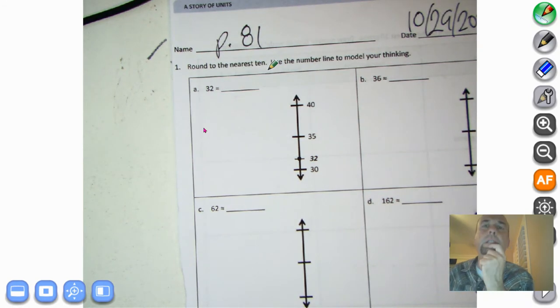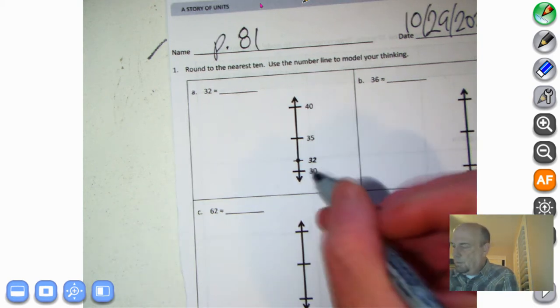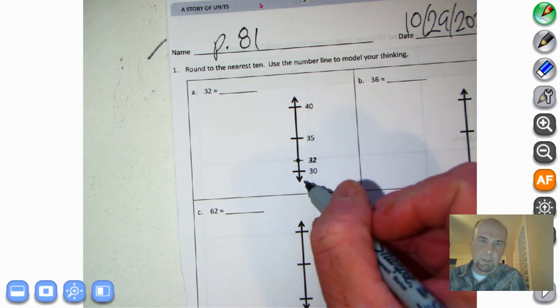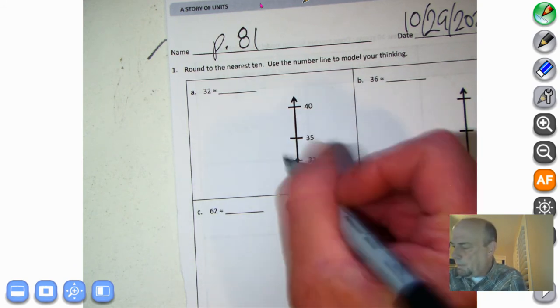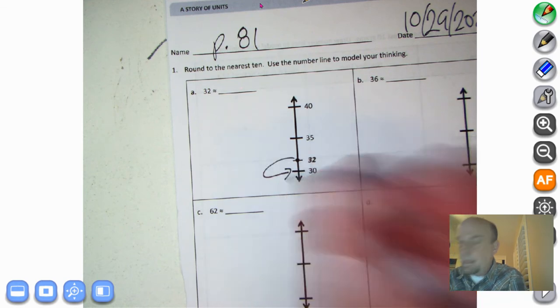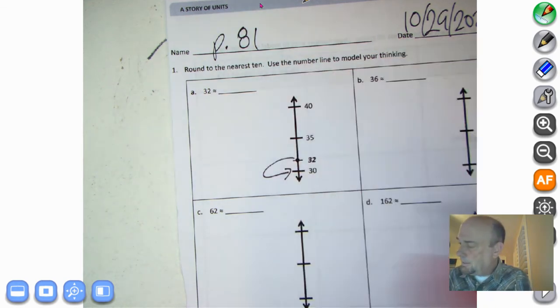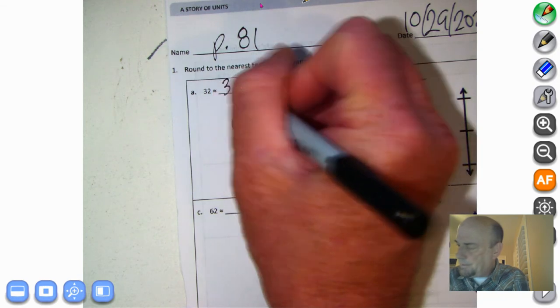Okay, so round to the nearest 10, use the number line to model your thinking. All right, so we have 32. Folks, look at this. What's it closer to? Is it closer to 30 or 40? We know it's below the midway point, so what do we do? We round down. Now, that was a Dracula voice. So we round down to 30. See how it works?